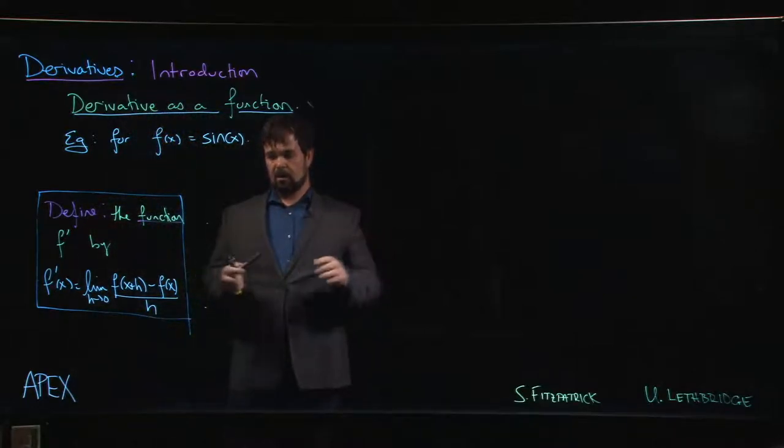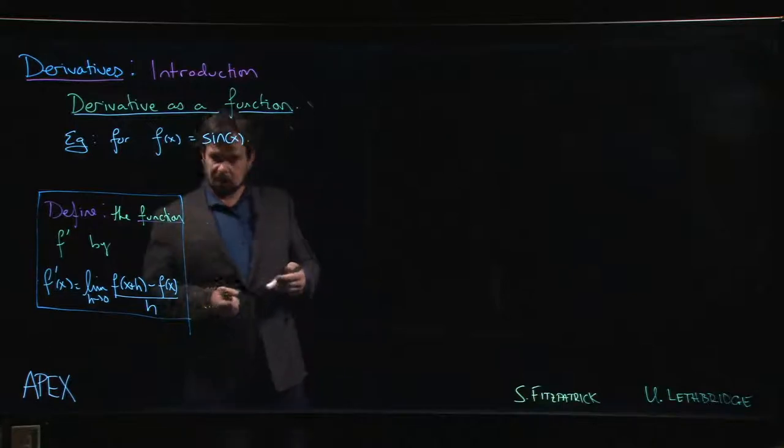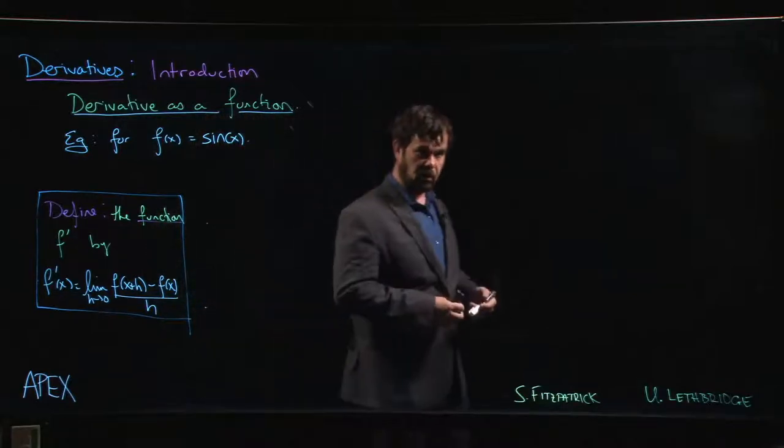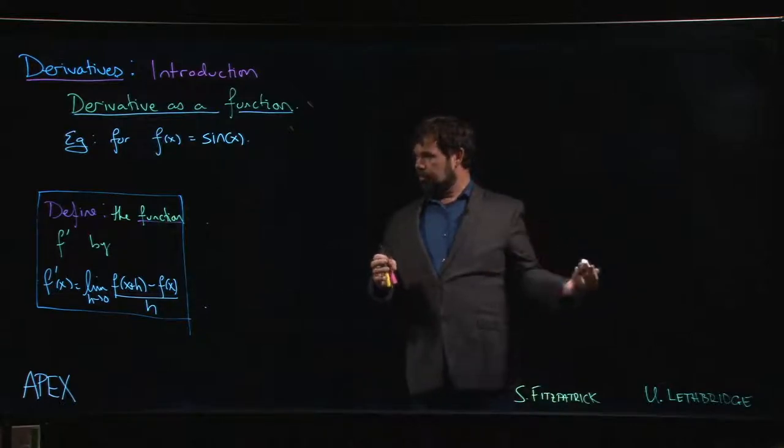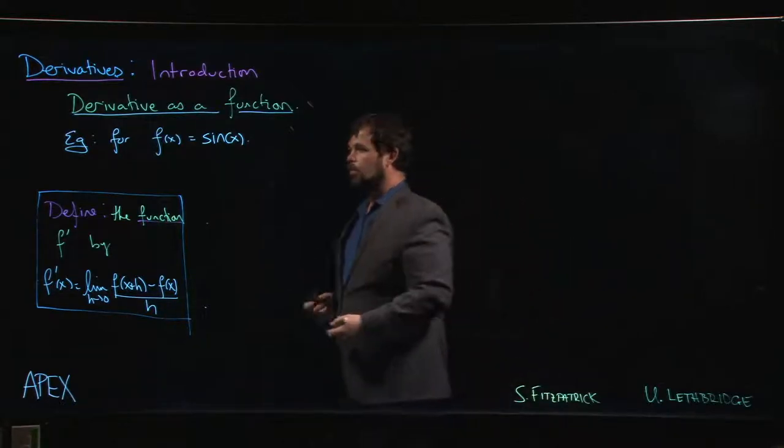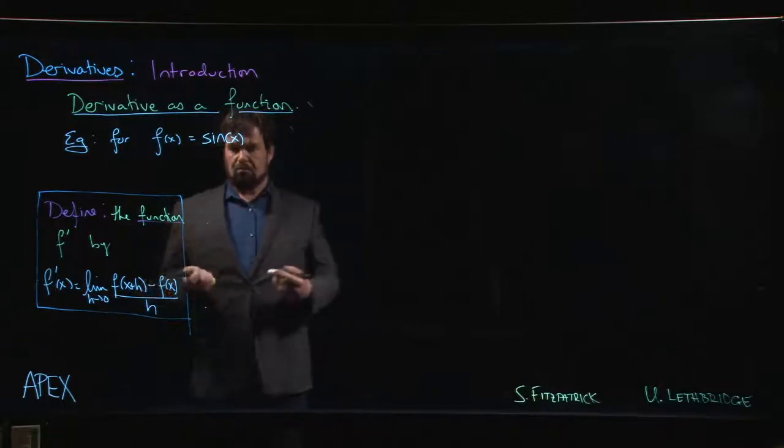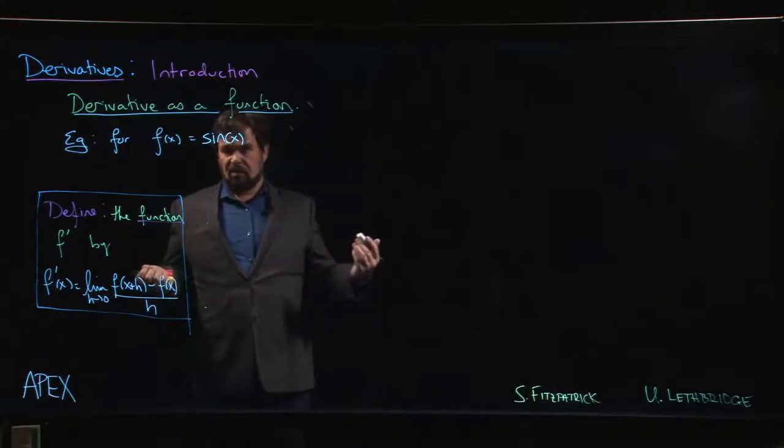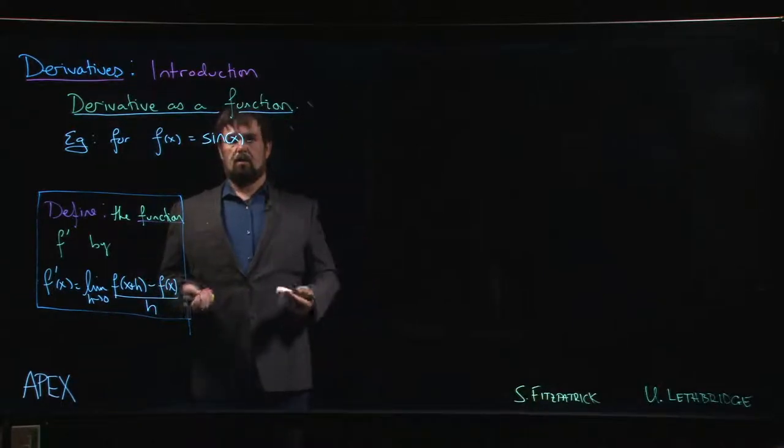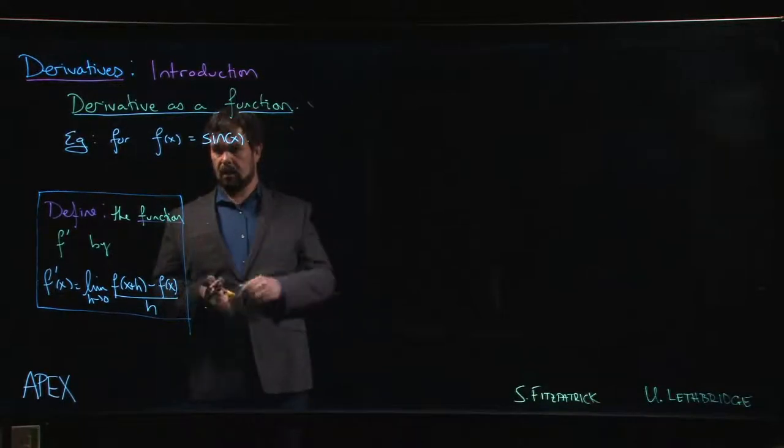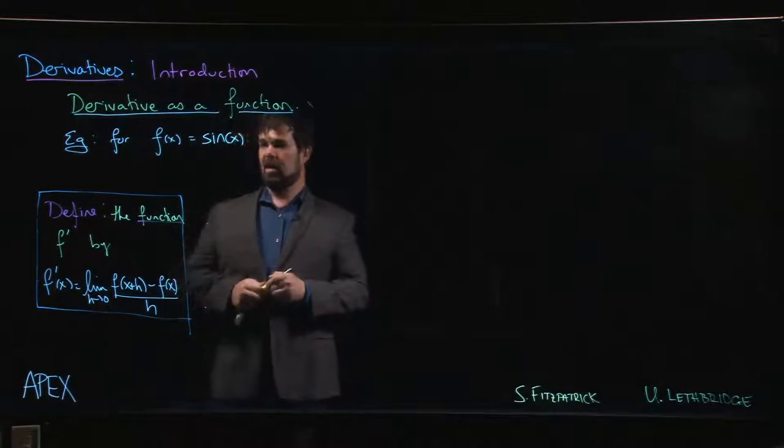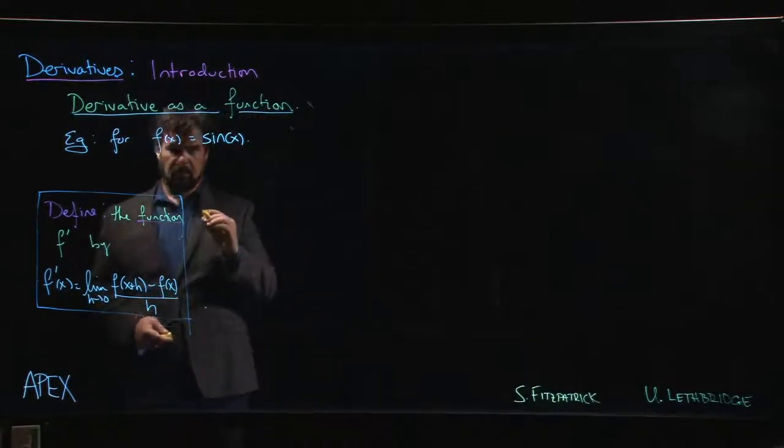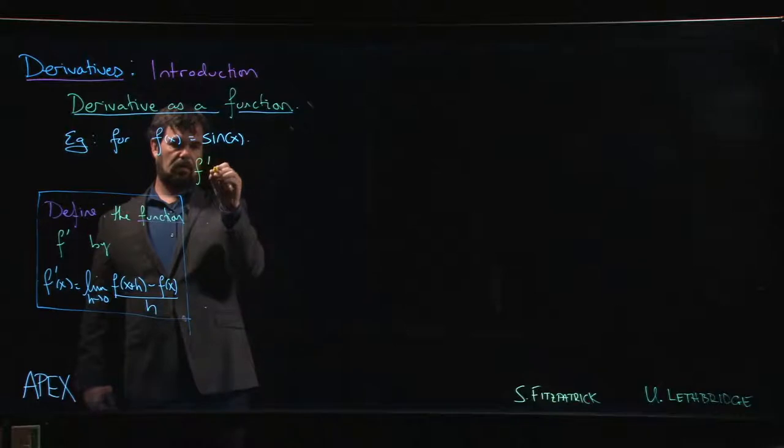Now, if you think back to the limits chapter, you'll remember we spent a bunch of time working out some special limits involving trig functions. We had to use the squeeze theorem. There was a fair amount of work involved, and you might have wondered why we're going to all this trouble. Was there a reason? Well, there is, and the reason is going to come up here. Without those limits, we can't compute the derivative of the sine function. So let's see how this goes.